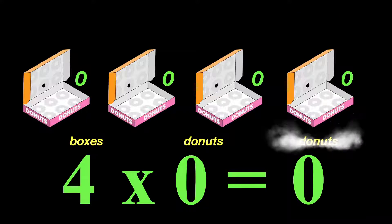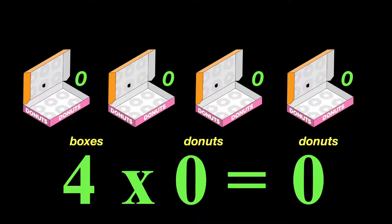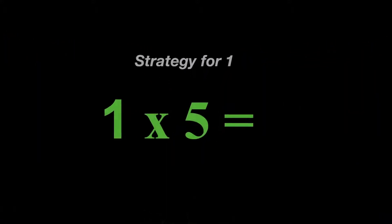Well that's equal to zero donuts. Now do we have four boxes? Yes, but when we're talking about the donuts, we have zero donuts. So that's kind of a way that we could make sense of why you can multiply by zeros.